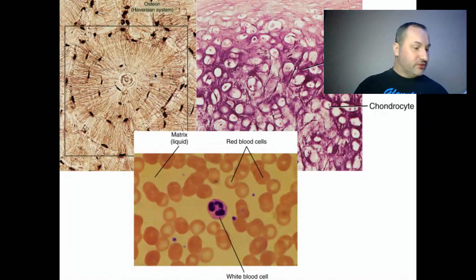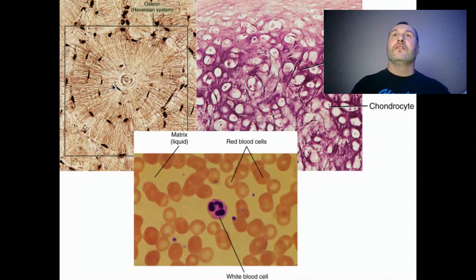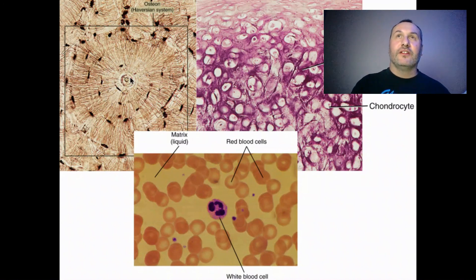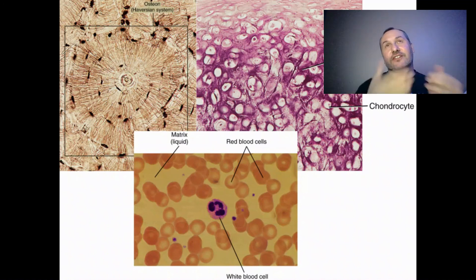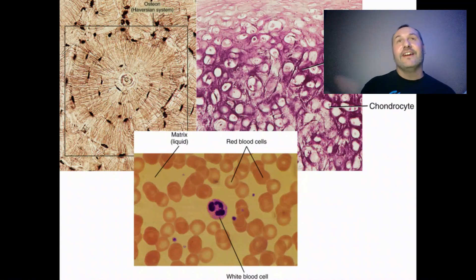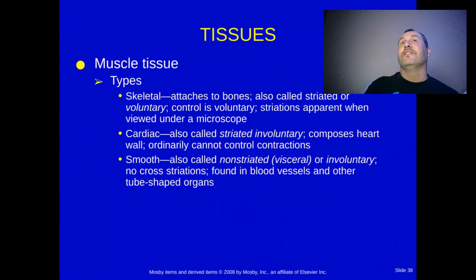Looking at this connective tissue image — it looks like a tree, and correctly so: it is a bone cell. A bone cell in the middle with extensions — many people say it looks like a cut tree, and that's a great way to remember it.